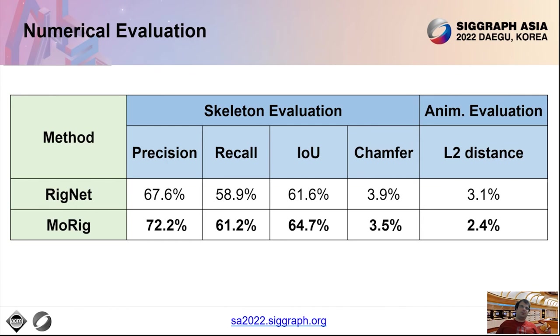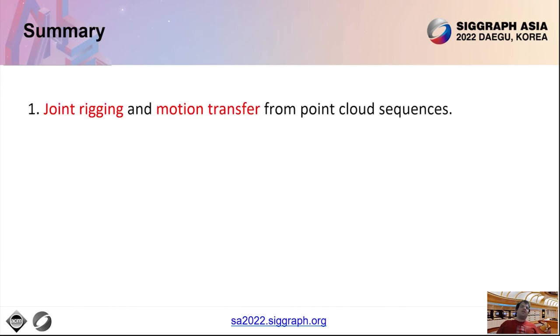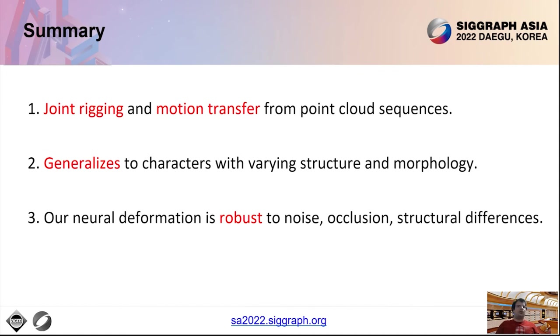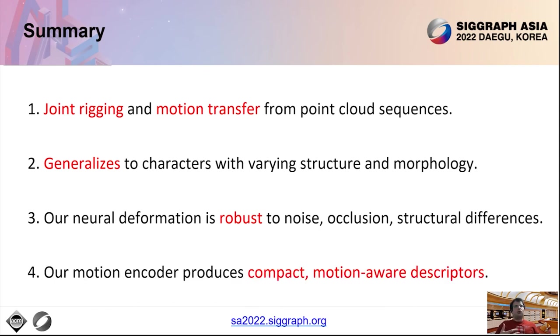To summarize our work, our method represents a first step towards learning-based rigging and motion transfer from point clouds. It can handle diverse characters with varying structure and morphology. Our neural deformation aligns meshes with point clouds under noise, occlusion, and small structural differences. It can be potentially useful for other applications, such as template-based point cloud reconstruction. Finally, our motion encoder compactly encodes motion trajectories of mesh vertices into features revealing articulating parts, which can be useful in other applications, such as motion-based retrieval and segmentation.